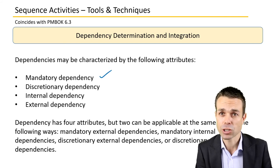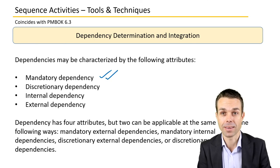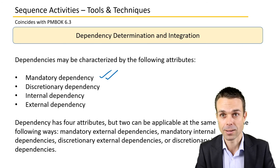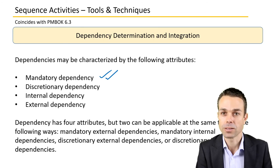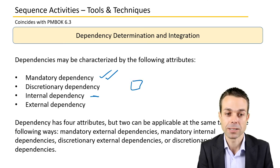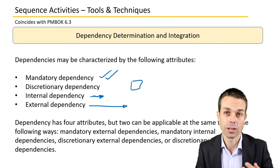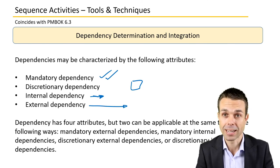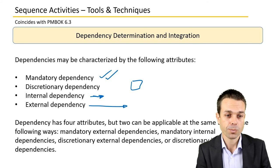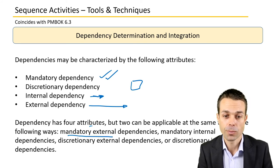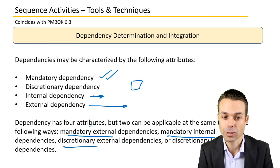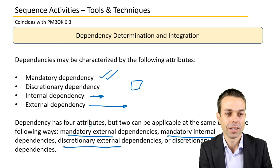Dependency determination and integration: there are a few types of dependencies you might come across. Mandatory dependencies are things that absolutely have to be done — a definite requirement for an activity to start. Discretionary dependencies are based on someone's opinion and may change. Internal dependencies relate to the organization or the team, and external dependencies might include market forces, political forces, or regulations. Dependencies have four attributes and two can be applicable at the same time — for example, mandatory external or discretionary internal.